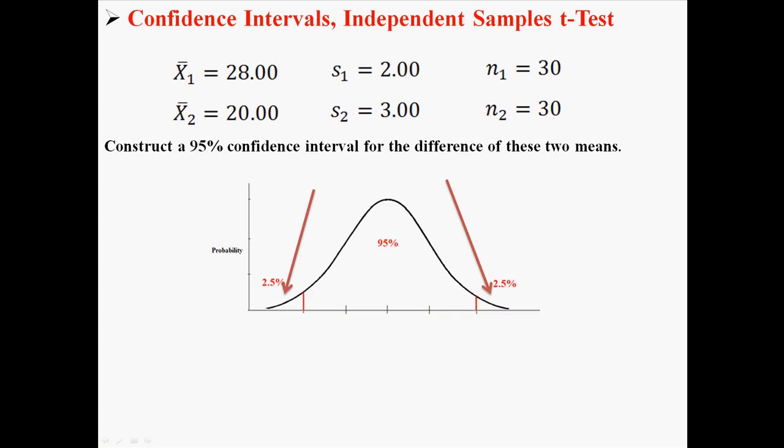First of all, we're constructing a 95% confidence interval. That means there's 5% left over. We have an alpha of 0.05. So we're going to use an alpha of 0.05 when we're looking up our t value.